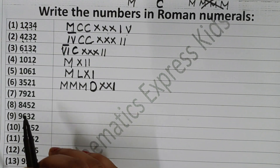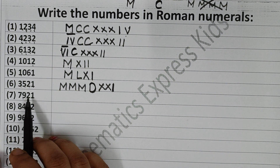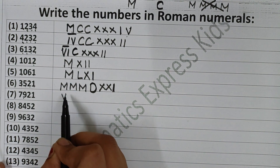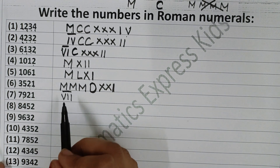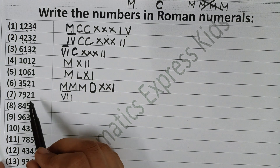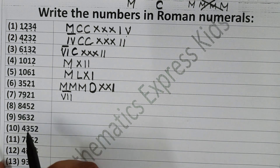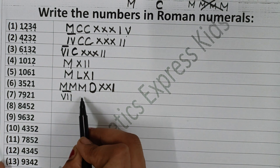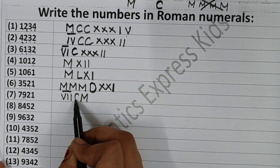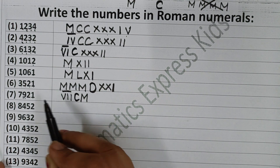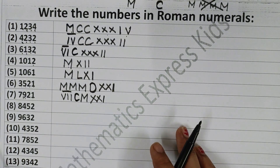Now the next one is 7921. How do you write 7000? Write 7 — that is 5 plus 1 plus 1, so VII — and give a bar over it. This bar stands for 1000, so VII-bar is 7000. For 921: how do you write 900? Write 1000 and subtract 100 from it — CM — that is 900. Then 21: 20 is XX and 1 is I.